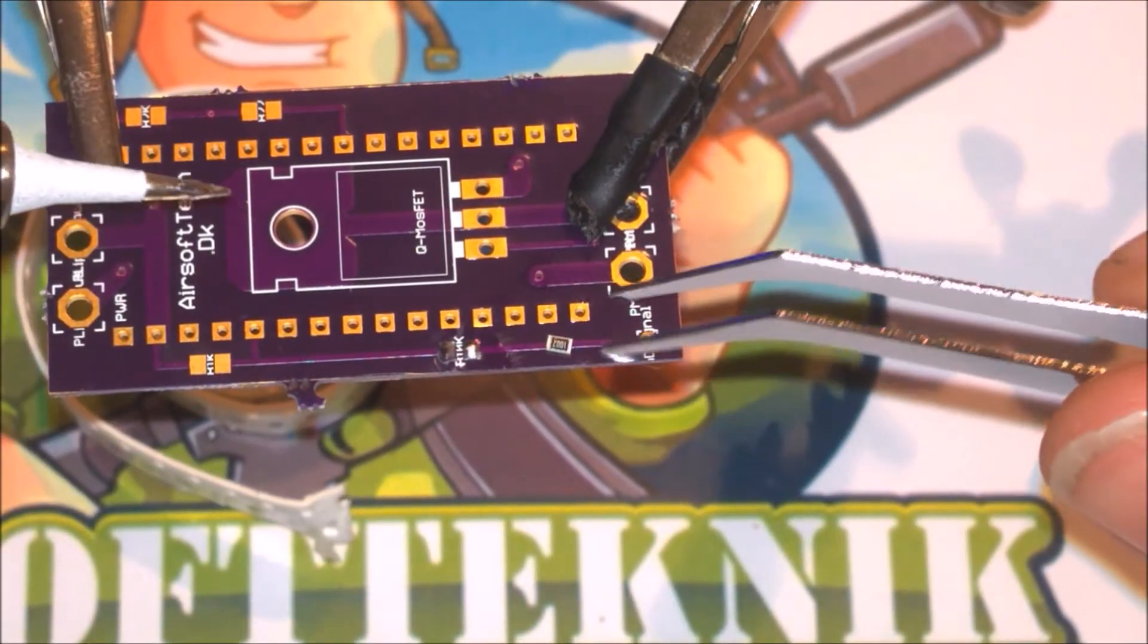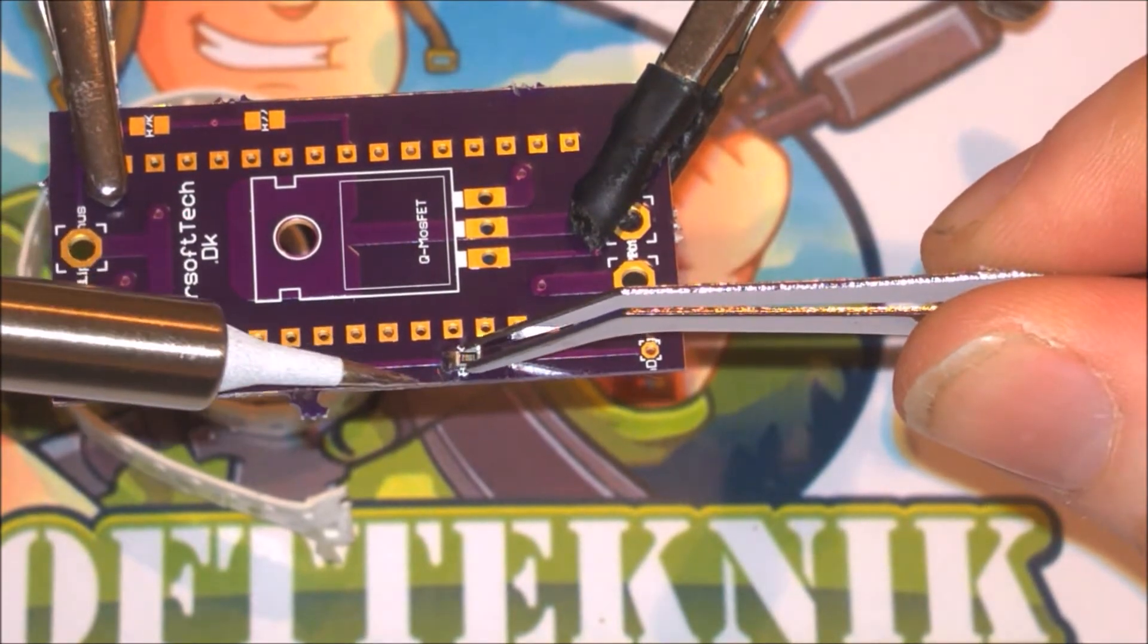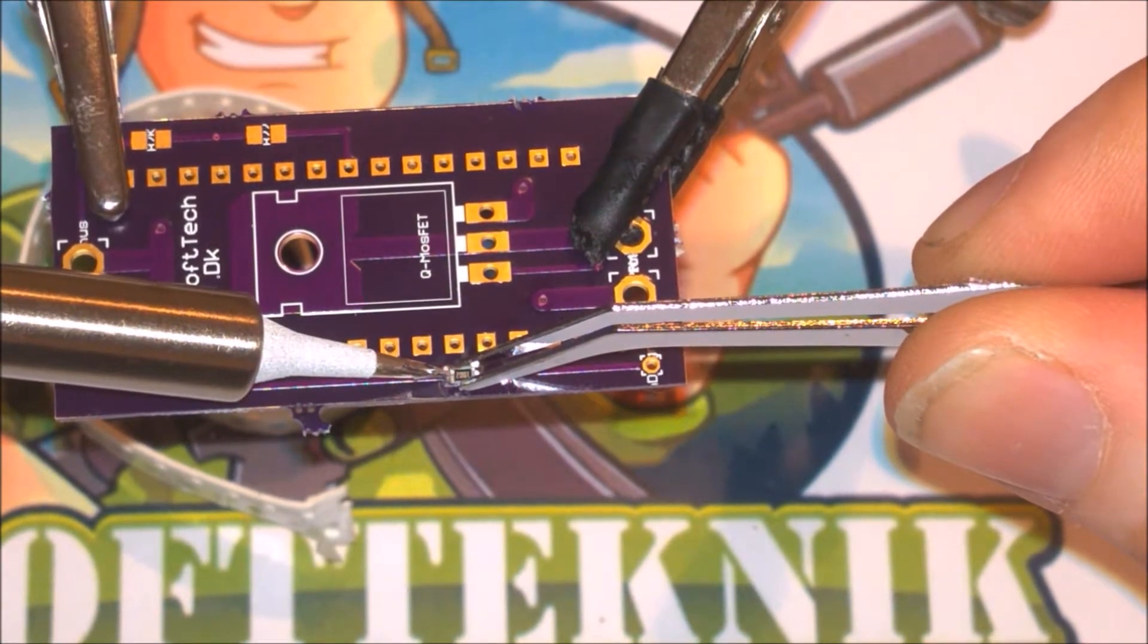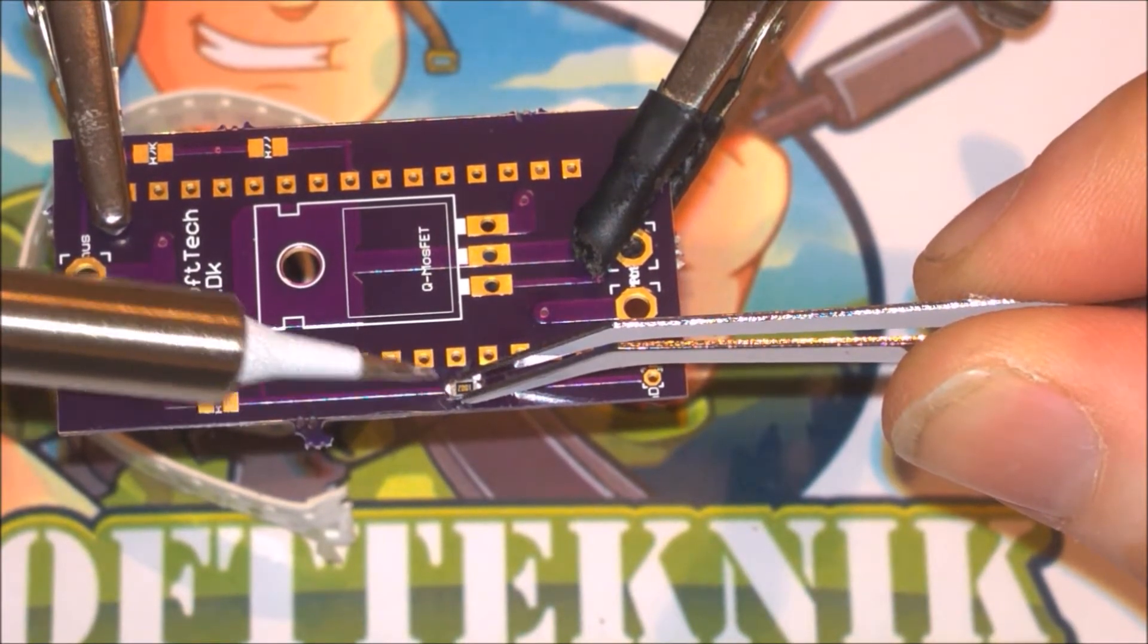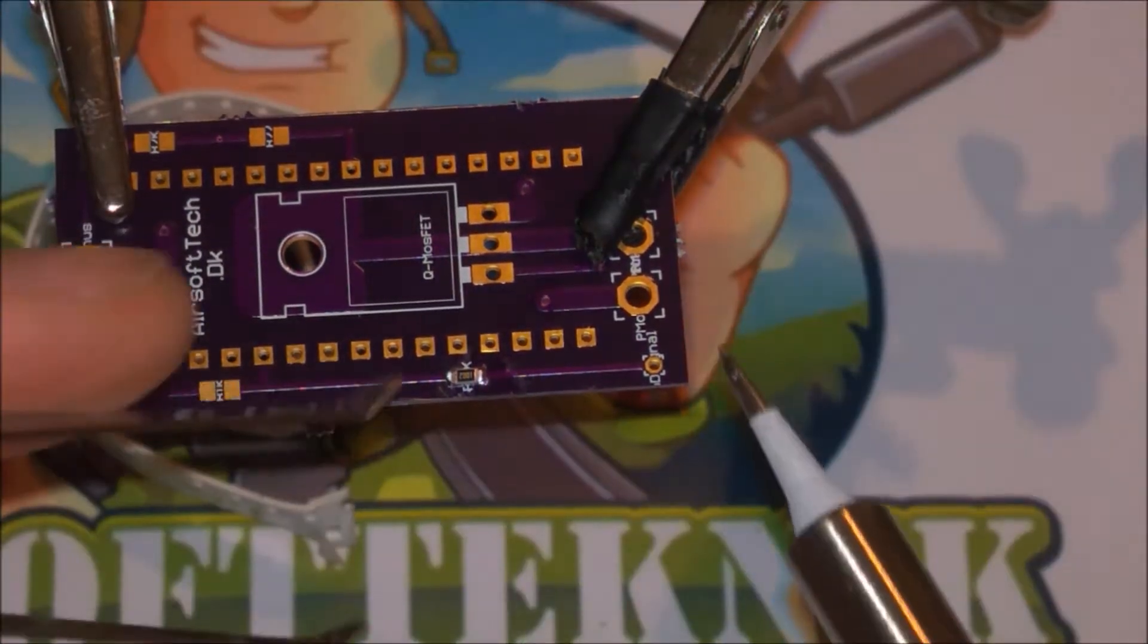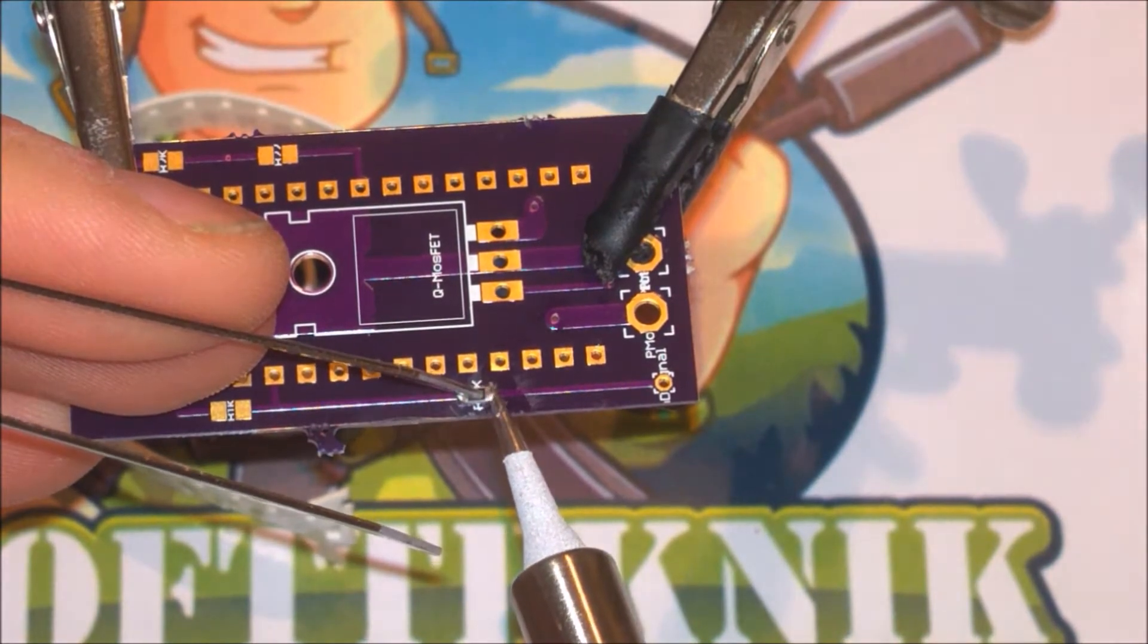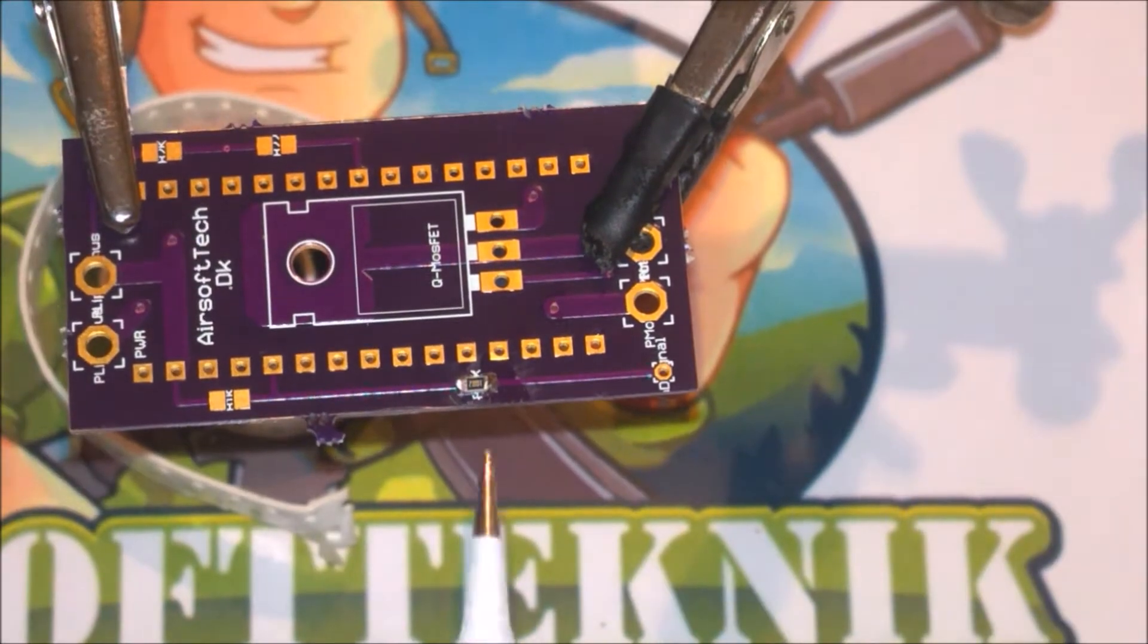Using a pair of tweezers I place the resistor on the solder pads and reflow the first side. When the resistor is attached at one end I reflow the other end, so the resistor gets attached to both solder pads.